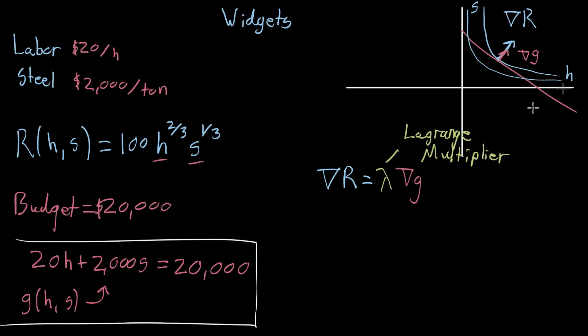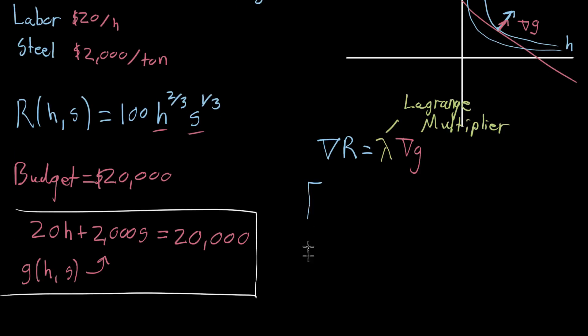So let's go ahead and start working it out. Let's first compute the gradient of r. So the gradient of r is gonna be the partial derivative of r with respect to its first variable, which is h. So partial derivative with respect to h. And the second component is its partial derivative with respect to that second variable, s. With respect to s. And in this case, that first partial derivative, if we treat h as a variable and s as a constant, then that 2 thirds gets brought down. So that'll be 100 times 2 thirds times h to the power of, well, we've got to subtract 1 from 2 thirds when we bring it down. So that'll be negative 1 third. Multiplied by s to the 1 third.